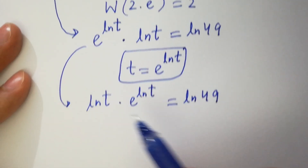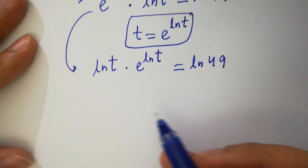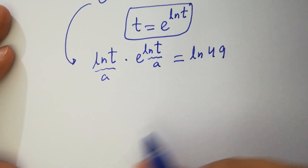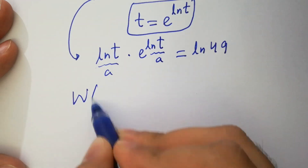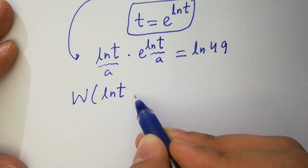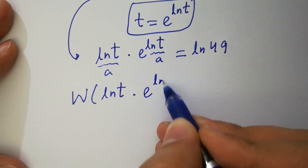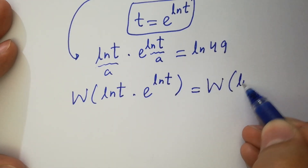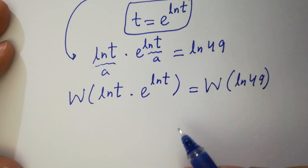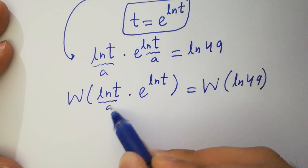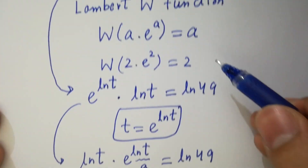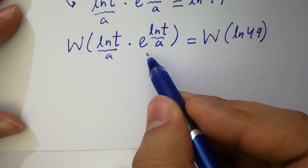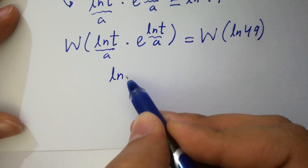This is of the form a times e to the power a. Apply the Lambert W function on both sides: W(ln t · e to the power ln t) equals W(ln 49). Since W(a · e to the power a) equals a, we get ln t equal to W(ln 49).